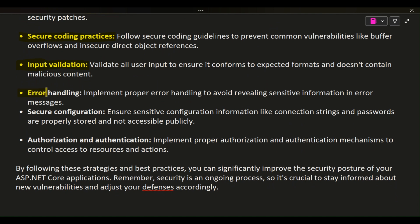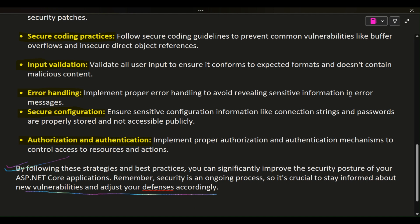Error Handling — implement proper error handling to avoid revealing sensitive information in error messages. Secure Configuration — ensure sensitive configuration information like connection strings and passwords are properly stored and not accessible publicly. Authorization and Authentication — implement proper authorization and authentication mechanisms to control access to resources and actions. By following these strategies and best practices, you can significantly improve the security posture of your ASP.NET Core applications. Remember, security is an ongoing process, so it's crucial to stay informed about new vulnerabilities and adjust your defenses accordingly.